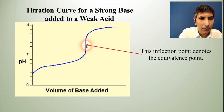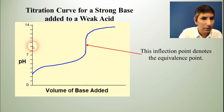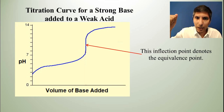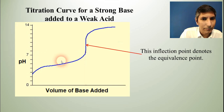That's because the equivalence point — that inflection point right there — has a pH greater than 7. That greater than 7 implies that the base is going to predominate, which is why we say strong base–weak acid in that case.